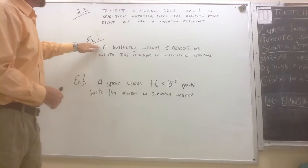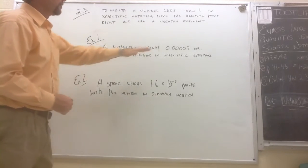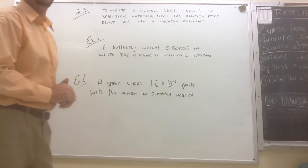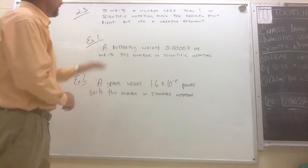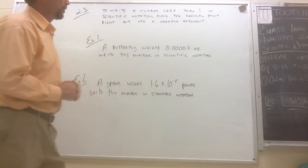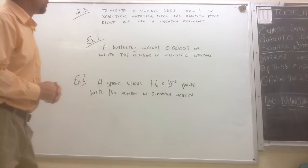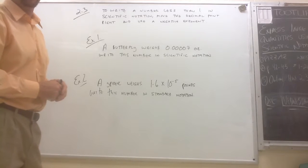So here we go. First example here, we have a number that's written in standard notation and we want to write it in scientific notation. It says a butterfly weighs 0.00007 ounces. Write this number in scientific notation.